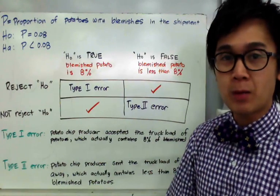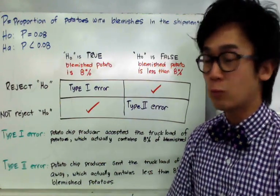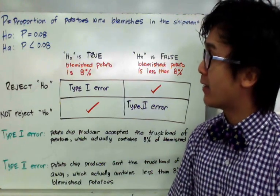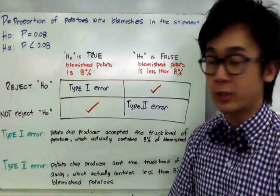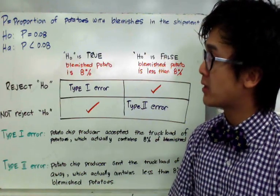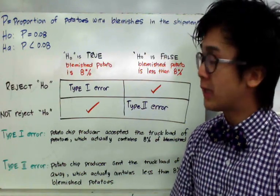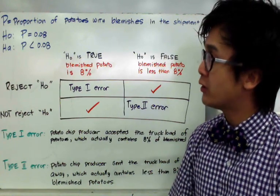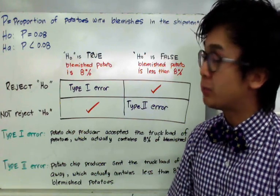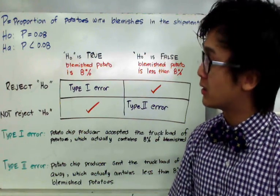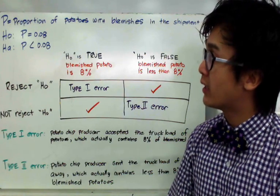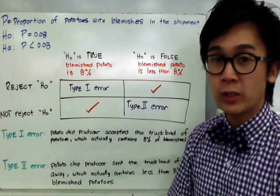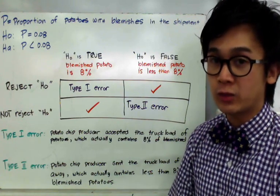Let's simulate the hypothesis testing for that word problem. P will be the proportion of potatoes with blemishes in the shipment. The null hypothesis will be P = 0.08, and the alternative hypothesis is P < 0.08. As a producer, I'm going to accept the truckload if less than 8% of the potatoes are blemished, and reject it if the blemished proportion is 8%.